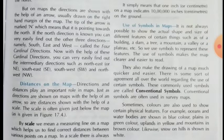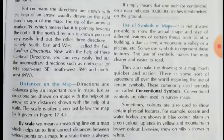Our next topic is the use of symbols in maps. It is not always possible to show the actual shape and size of different features such as a building, a dam, a tree, a mountain, a valley, or a plateau. So we use symbols to represent these features. The use of symbols makes the map clearer and easier to read, and also makes drawing a map much quicker and easier. There is a general agreement all over the world regarding the use of certain symbols. These commonly used symbols are called conventional symbols. Sometimes colors are also used to show certain physical features — for example, oceans and water bodies are shown in blue, plains in green, plateaus in yellow, mountains in brown, and snow on hills in white.